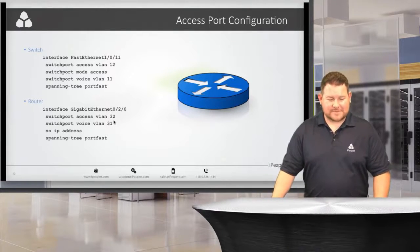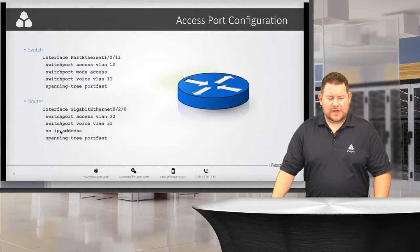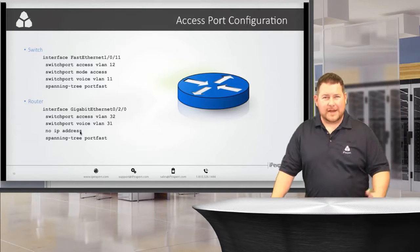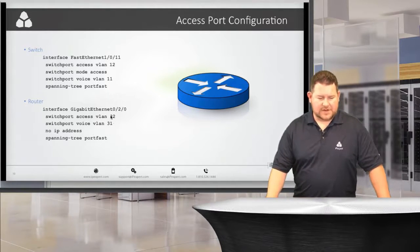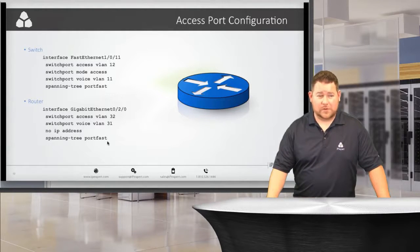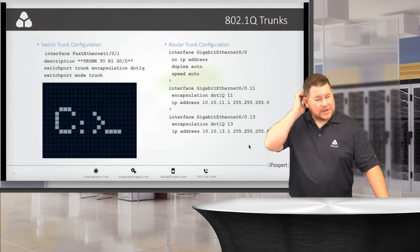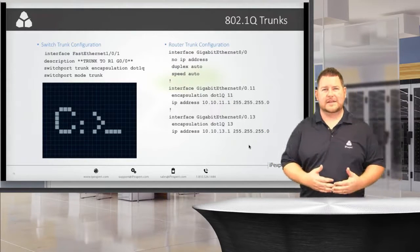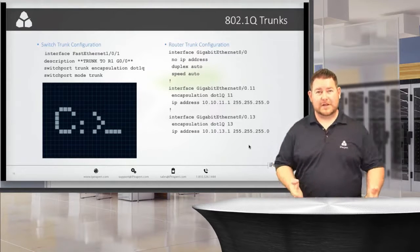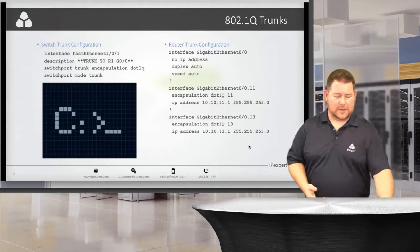The router configuration is the same way. The 'no ip address' command you might see in the show run — you don't have to type it, it's already a layer two port by default. So we have access VLAN, voice VLAN, and spanning-tree portfast configured on the router's EtherSwitch module ports as well.